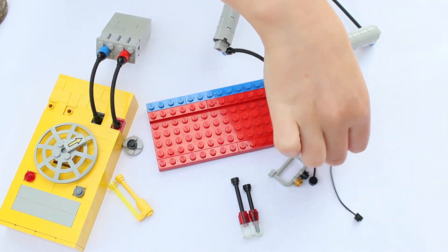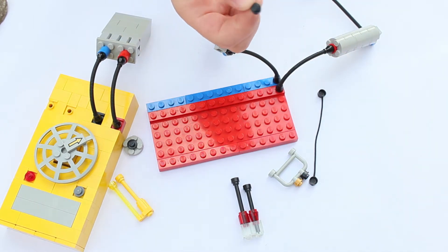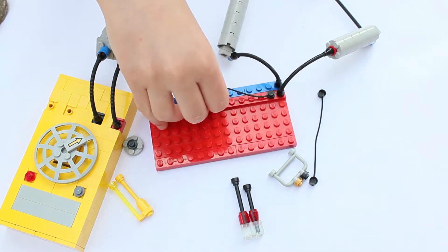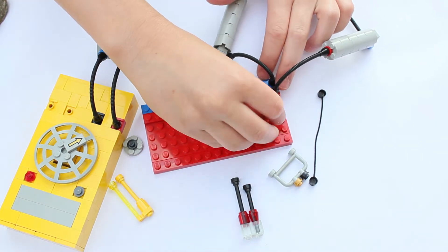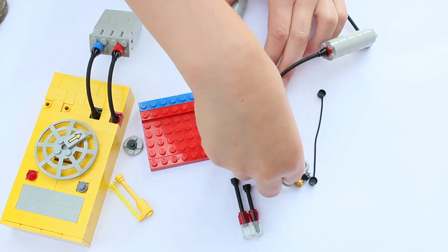Now to get power into the actual breadboard we're going to use a lead. Now this entire five line has power.